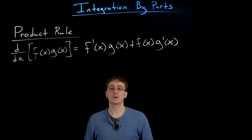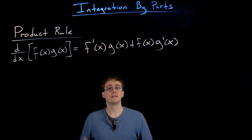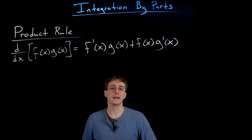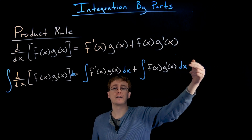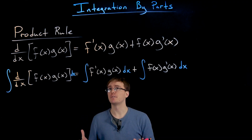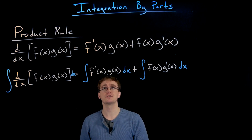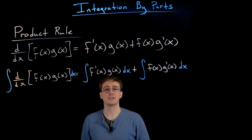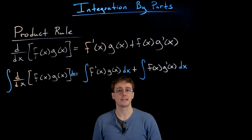To go from the product rule to our integration by parts formula, we just take the antiderivative or the indefinite integral of our current formula. On the right hand side we're also using the sum and difference property for antiderivatives, splitting that big integral into the sum of two smaller integrals: f prime times g in the first integral, and f times g prime in the second.